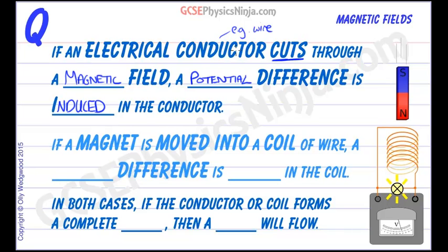So if an electrical conductor, for example a wire, cuts through a magnetic field, or vice versa, a potential difference is induced—and that's the key word you must use, along with potential difference—in the conductor.